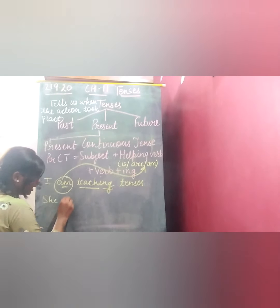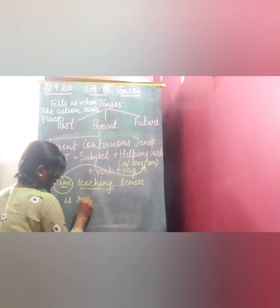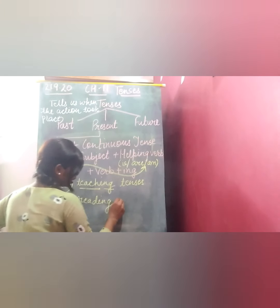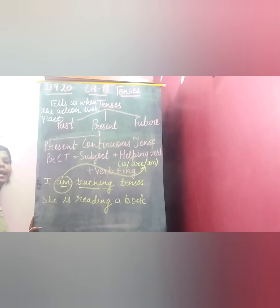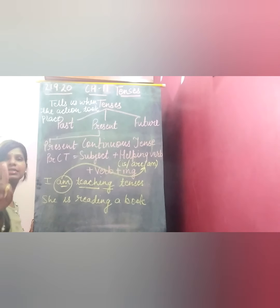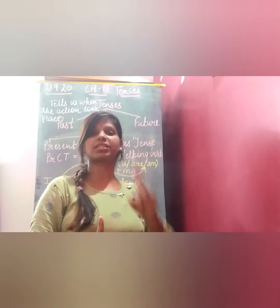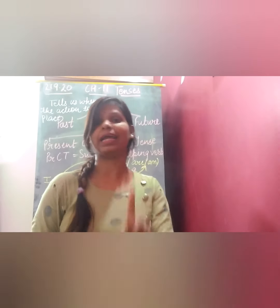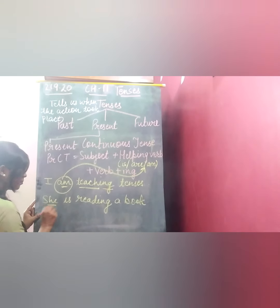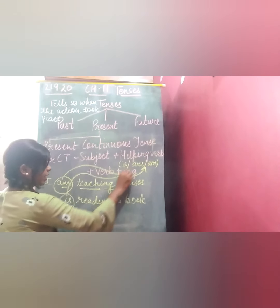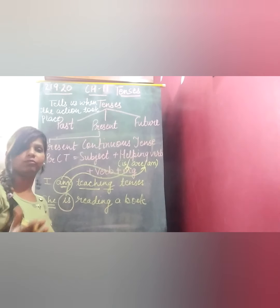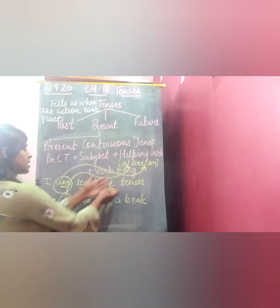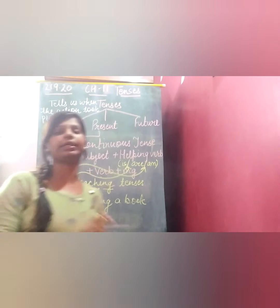Let me give you another example: 'She is reading a book.' 'She' is your subject, and 'she' is a singular pronoun — just one person. That is why we have used 'is', because the subject is singular. Then comes the verb plus 'ing', and then the remaining part of the sentence.